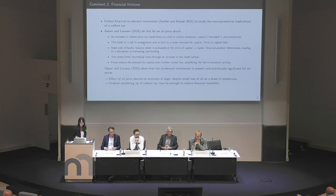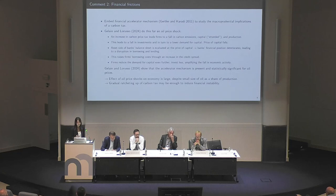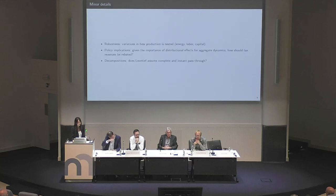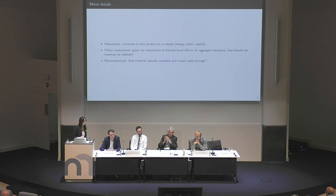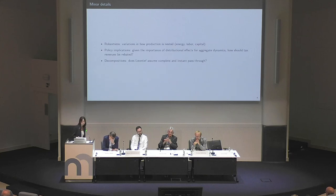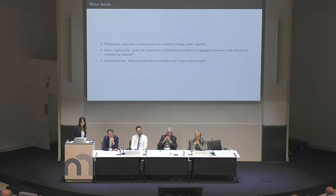On the surface it might seem this would make the tax more progressive, but there are important spillover effects to capture, and the model is rich enough to do that. I'll also note some minor details about robustness to how production is nested. The way it's currently structured — energy and capital as complements — is probably the most plausible, but there may be questions about how nested production functions interact with complementarity with labor as well. The richness of the model and the various channels it captures makes it really appropriate for policy analysis. The paper addresses a positive question — what is the effect of a carbon tax, and which households and sectors drive aggregate dynamics? But given that distributional effects matter for the dynamics, an important related question is how revenues should be redistributed among sectors or households.